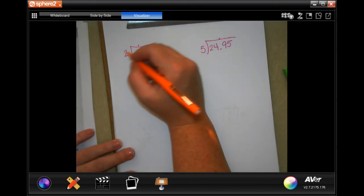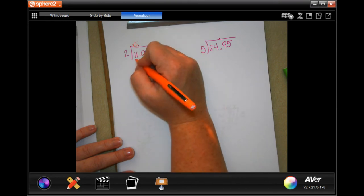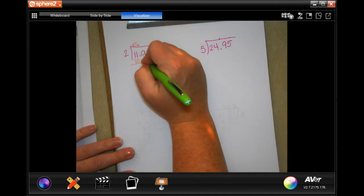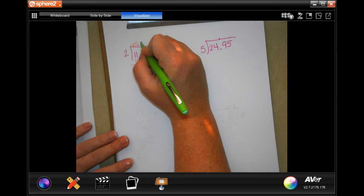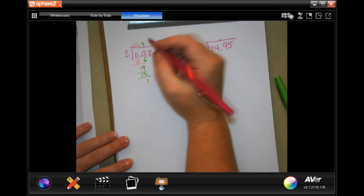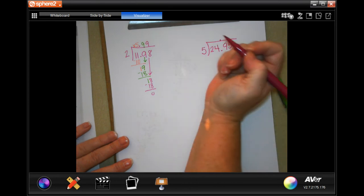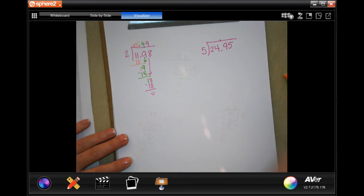So 2 is not going to go into 1, placeholders. 2 will go into 11, 5 times. 5 times 2 is 10, subtract, get 1. 1 is less than 2, so I can bring down my 9. 2 goes into 19, 9 times, which is 18. Subtract and I get 1. So now I'm going to bring down that 8. And we just said that 2 goes into 18, 9 times, which is 18. Subtract, get 0. So the first one is $5.99 per game. The second one, let's find out.